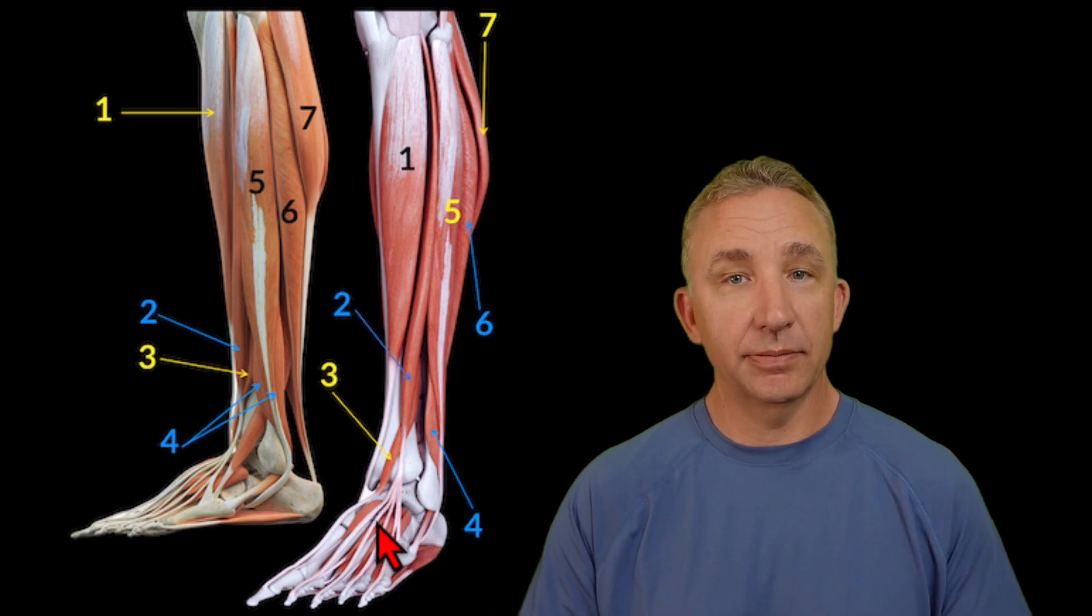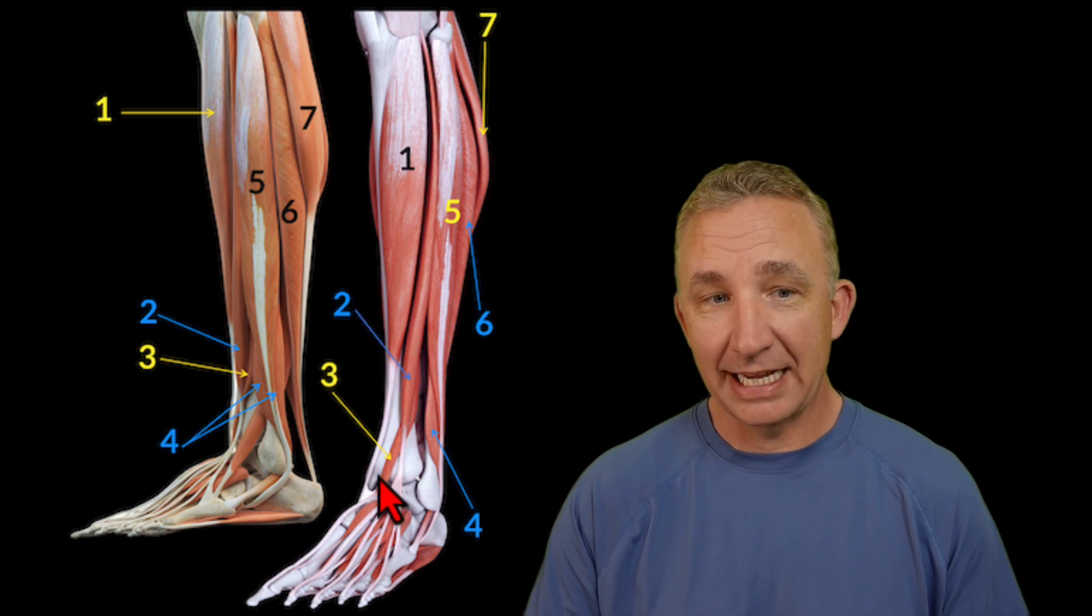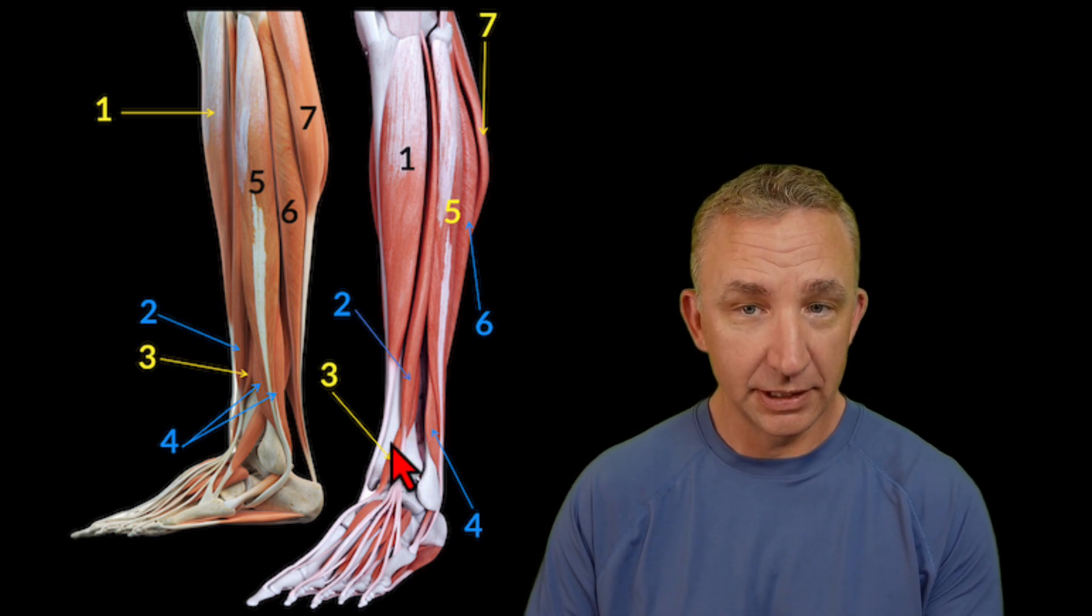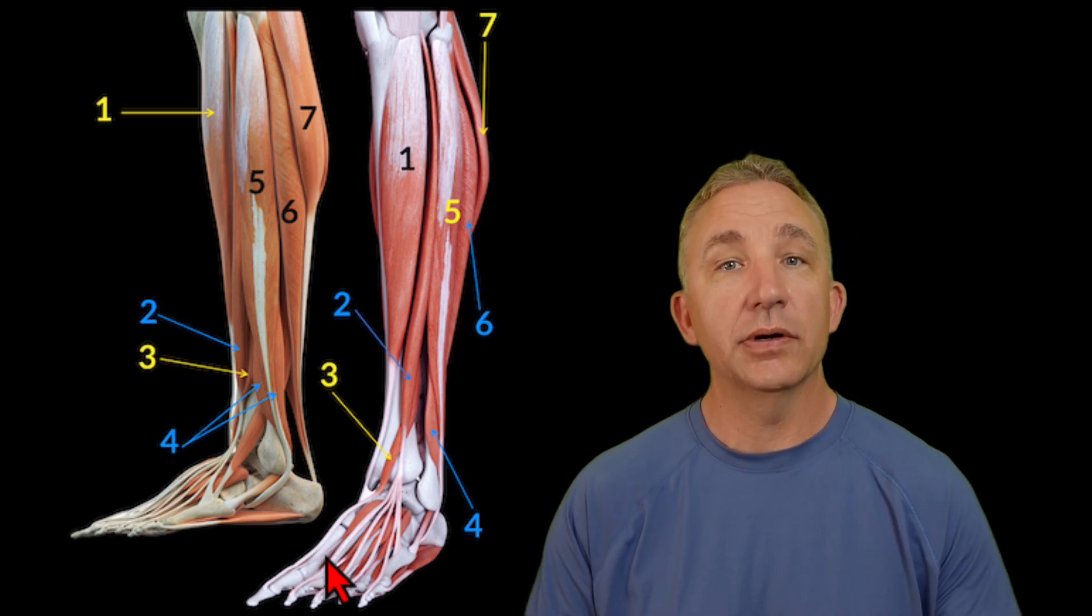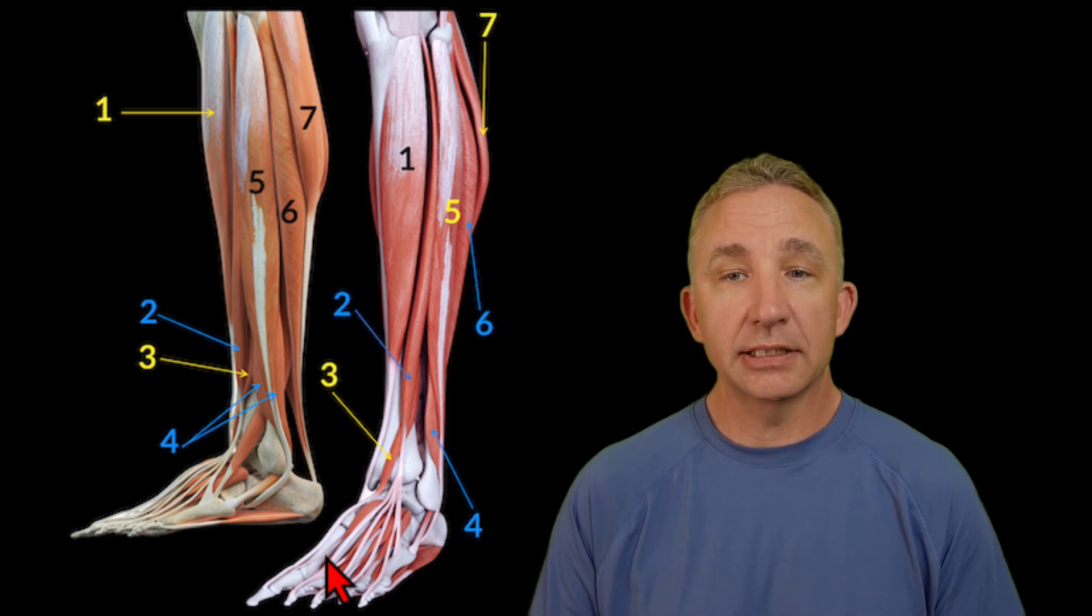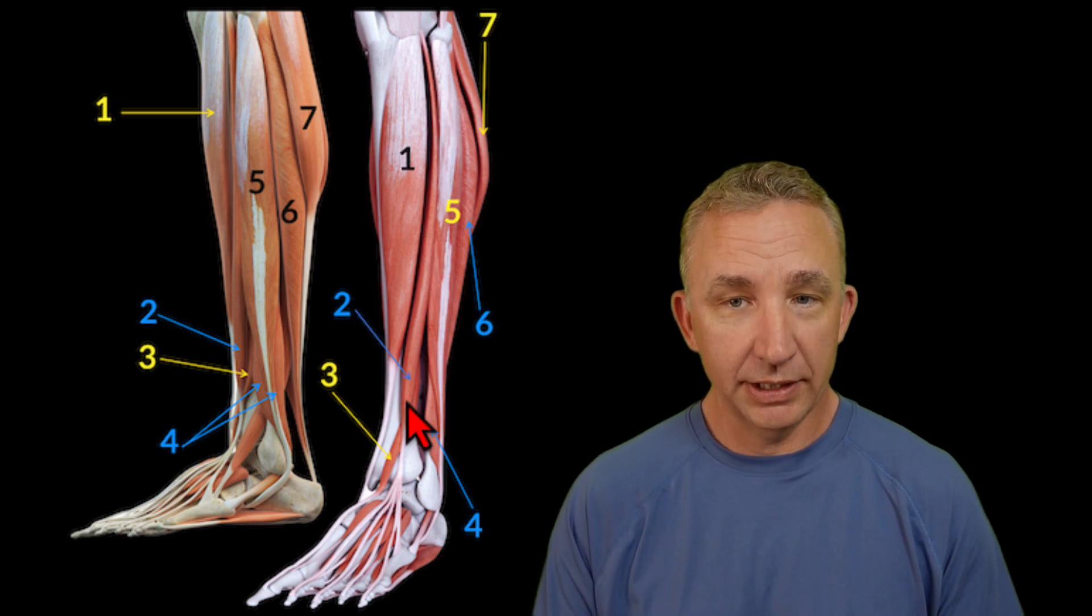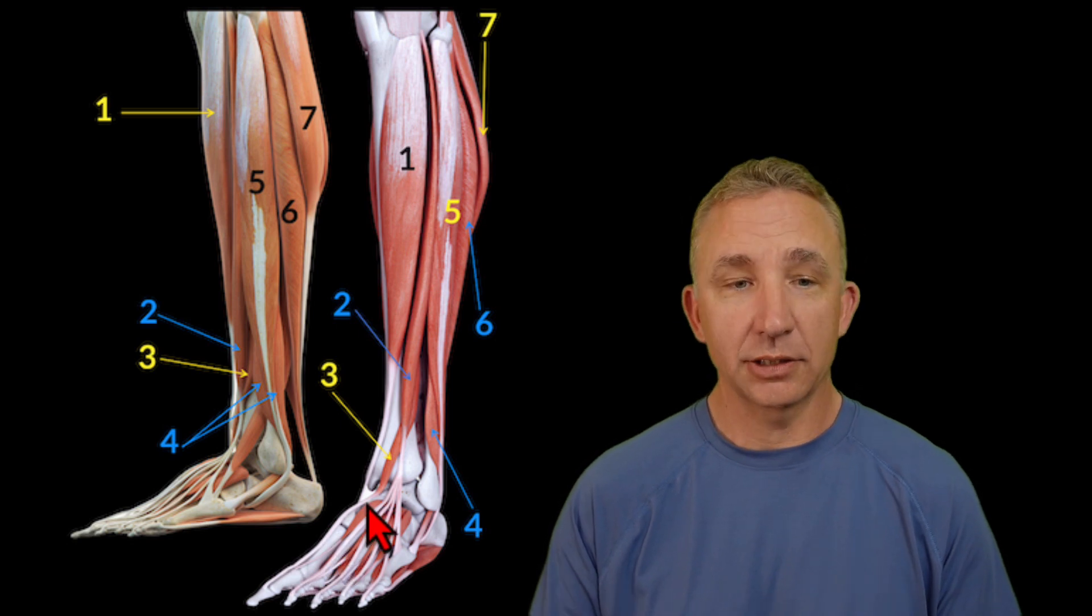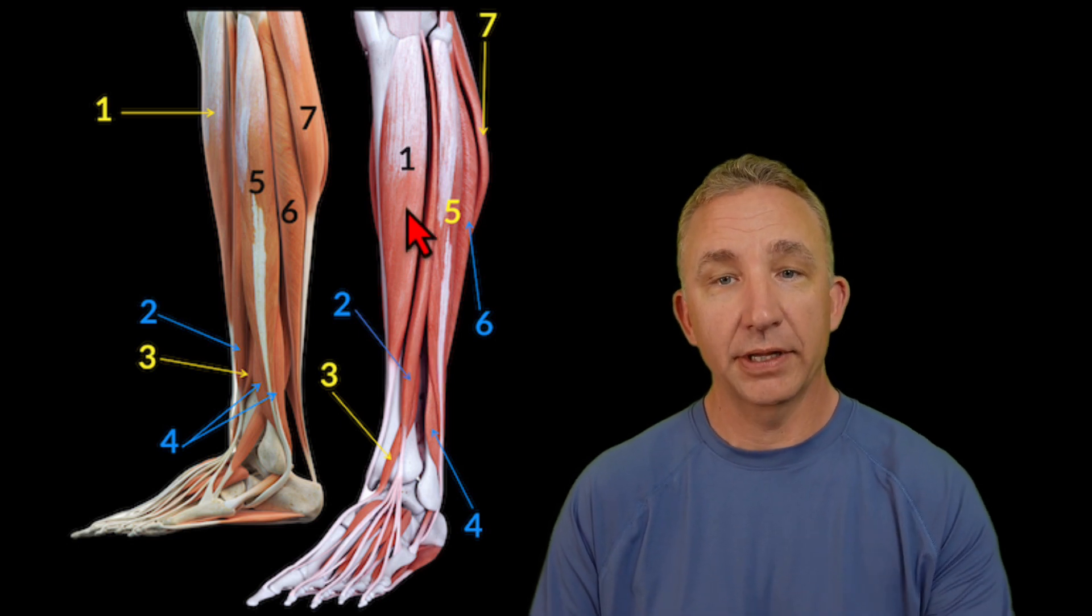So extend the toes, and then my tibialis anterior will help that dorsiflexion. Similarly, number three is extensor hallucis, or hallucis longus, specifically for the toe. So as I follow this on the big toe, that tendon will come down and connect. So it's inserting at the big toe, and we're also extending the toe, but number one, which is our hallux. So it originates on the fibula side, because it's coming off towards the lateral part of the fibula, but comes down and connects to my big toe, which is our number one, or hallux, because we're trying to extend the big toe. So those are my two extensors along the tibialis anterior for that dorsiflexion.